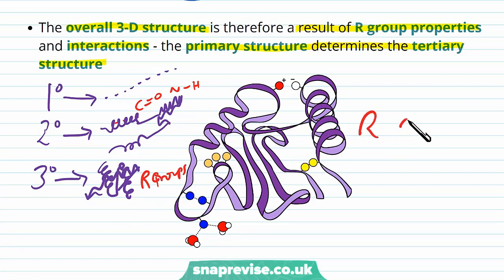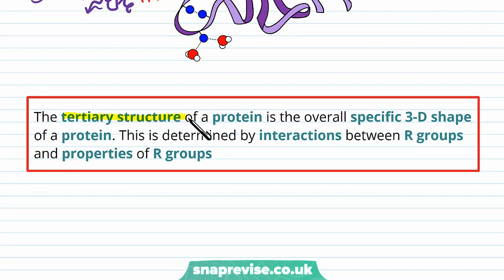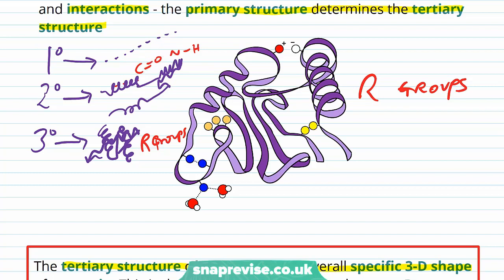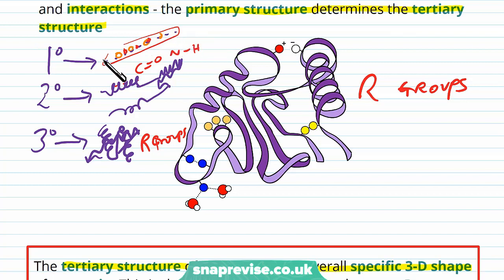So all of these interactions of R groups drive the tertiary structure. By definition, the tertiary structure of a protein is the overall specific 3D shape of a protein, determined by interactions between R groups and the properties of those R groups. Remember, if the primary sequence controls which amino acids are present, it's going to control which ones are hydrophobic, which ones have sulfurs in them, which ones are positive or negative, and which ones can form hydrogen bonds. Because it's all controlled at the primary level, this is going to dictate exactly how the protein folds, and the range of shapes is also massive.